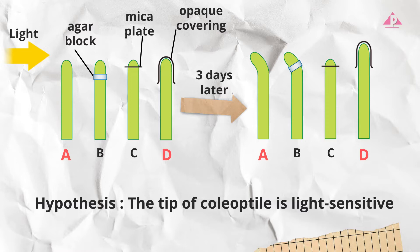Between these two setups only the tip of coleoptile D was covered by an opaque covering. Under unilateral light A grew and bent towards the light while D grew straight up.